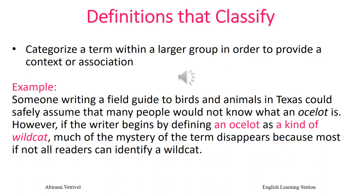The third type of definition is the definition that classifies. These definitions categorize a term within a larger group in order to provide context or association. For example, if we talk about the word ocelot without clearly classifying it within a larger group, the audience might find it difficult to understand what ocelot really is. Therefore, we define the term ocelot with the phrase 'a kind of wild cat.' The moment the reader encounters this phrase, it becomes easier to connect, relate, and understand the term better. So this is an example of a definition that classifies.